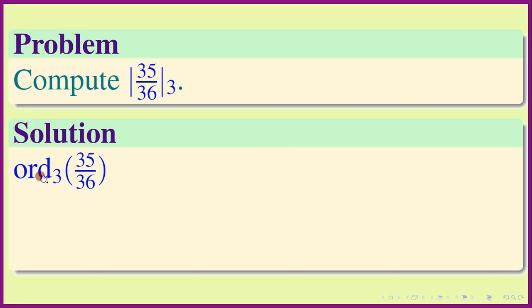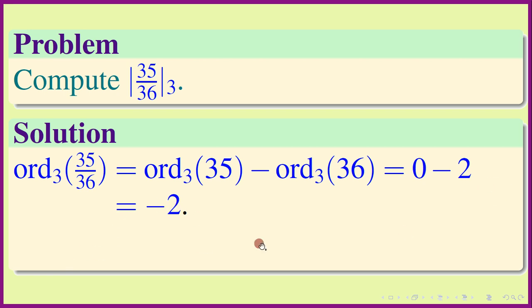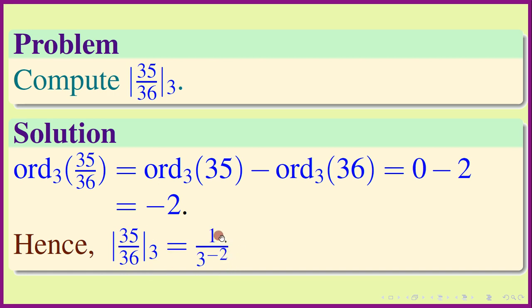Now a problem: let us compute the p-adic norm of the rational number 35/36, with p = 3. The 3-adic valuation of 35/36 equals v_3(35) − v_3(36). Since 3 does not divide 35, v_3(35) = 0. Since 9 = 3² divides 36, v_3(36) = 2. So v_3(35/36) = 0 − 2 = −2. Hence |35/36|_3 = 1/3^(−2) = 9.